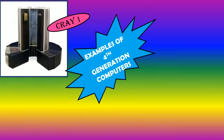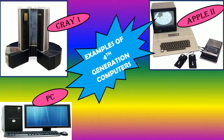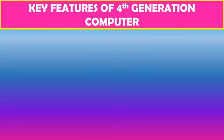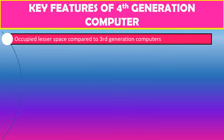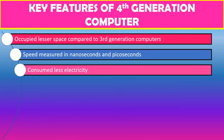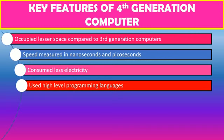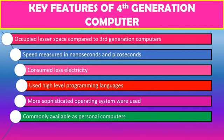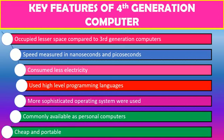Examples of 4th generation computers are Cray 1, Apple 2, and the PCs, laptops, and tablets which we are using today. Key features: they occupy lesser space compared to 3rd generation; speed is measured in nanoseconds and picoseconds; they consume less electricity; high level programming languages are used; more sophisticated operating systems are used; they are commonly available as personal computers; and they are cheap and portable — people can afford them and carry them from one place to another, like laptops.